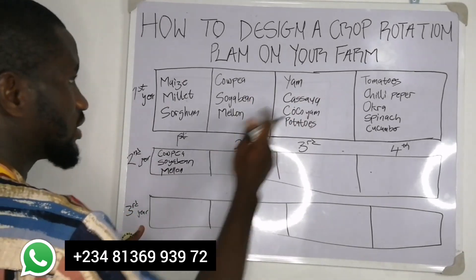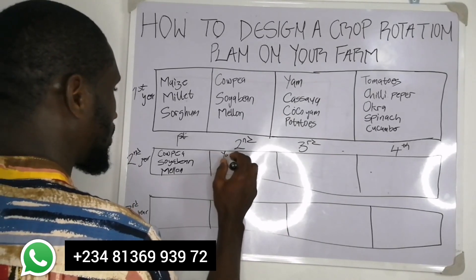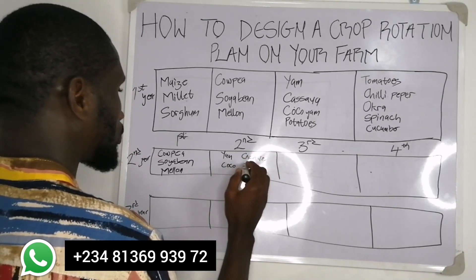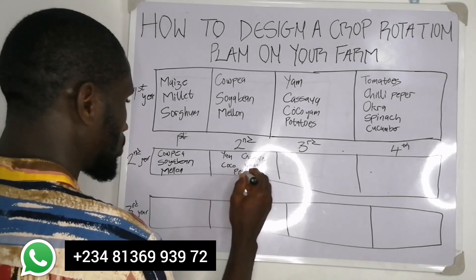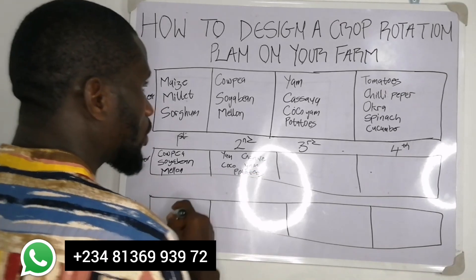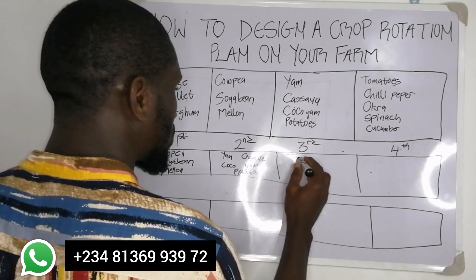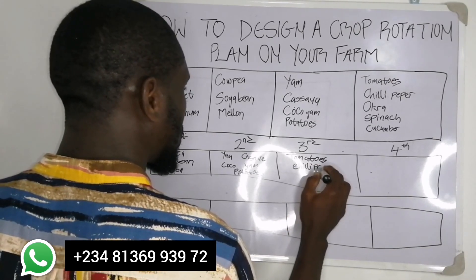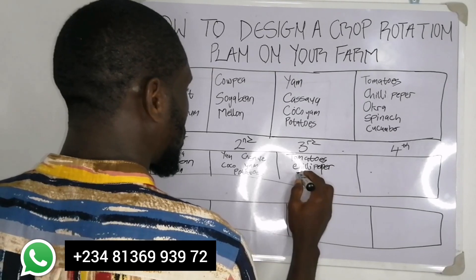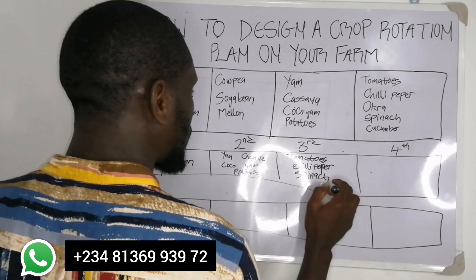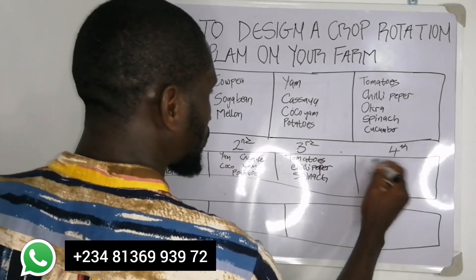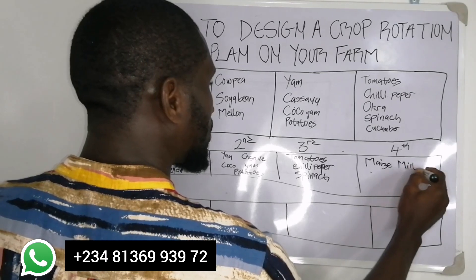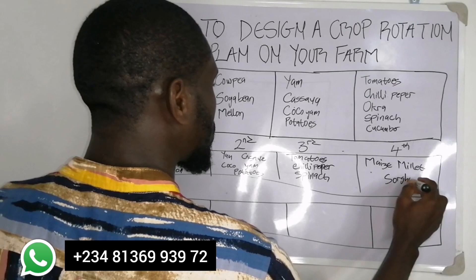On the second plot in the second year, instead of legumes, you're planting the root crops — yam, cassava, or potatoes. On the third plot, you now have the vegetable crops like tomatoes, chili, pepper, spinach. And on the fourth plot, you now have the cereals — maize, millet, or sorghum.